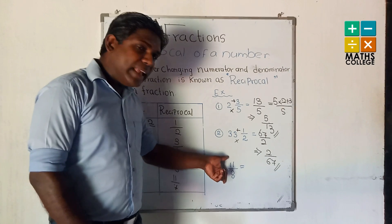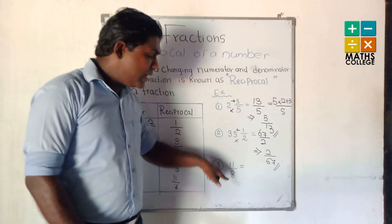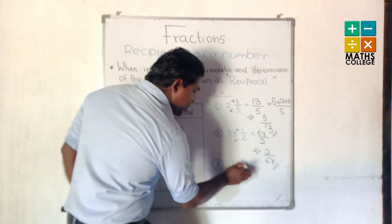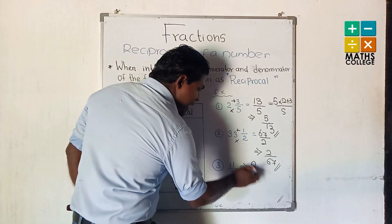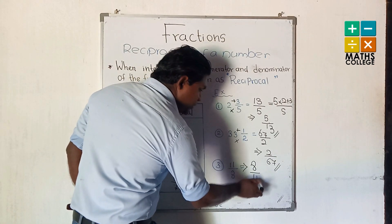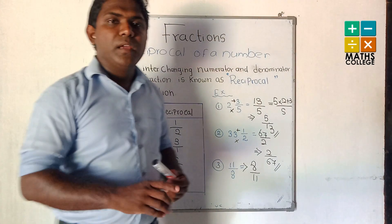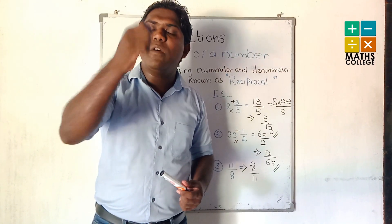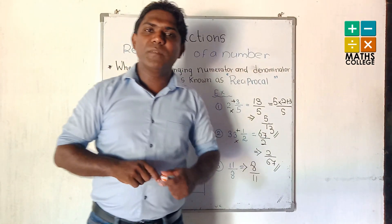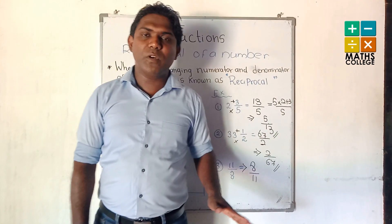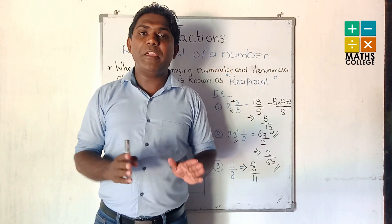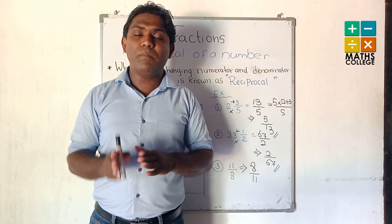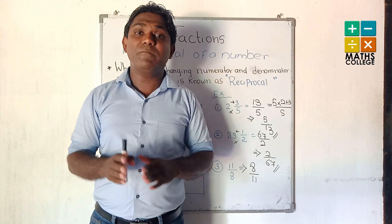Third example: 11 upon 8 — the reciprocal of this fraction is 8 upon 11. Today, firstly, we have learned what is the reciprocal, because this reciprocal is very important to solving problems with fractions.